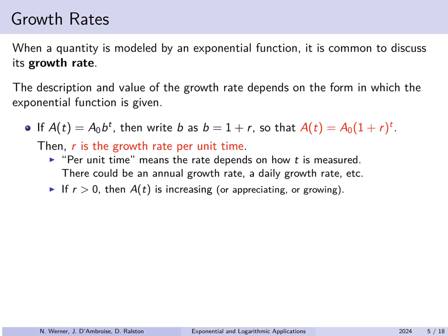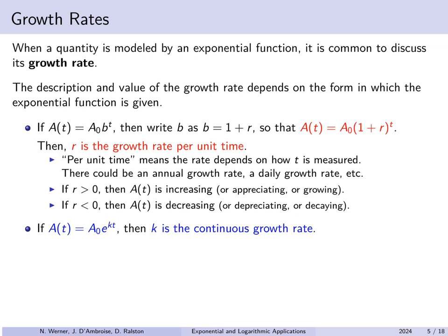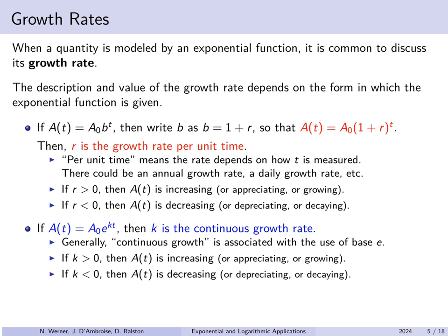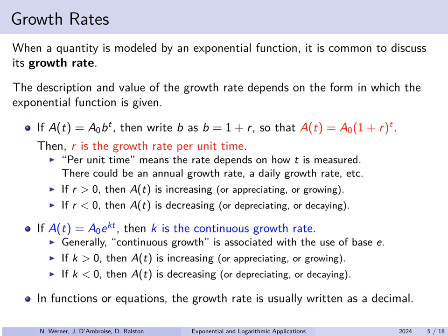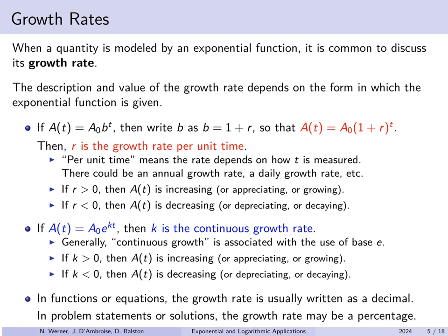If r is positive — meaning b is greater than one — the function is increasing or appreciating. If r is negative, b is less than one and a(t) is decreasing. For the form a(t) = a₀ · eᵏᵗ, k is called the continuous growth rate. When k is positive, the function is increasing; when k is negative, it is decreasing. The growth rate is usually written as a decimal in equations, but may be stated as a percentage in problem statements.